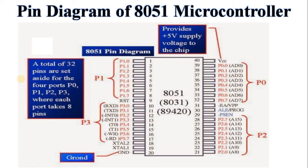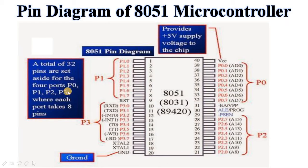The AT51 microcontroller is a 40-pin IC chip in dual in-line package. The AT51 has 32 I/O pins configured as 4 eight-bit parallel ports: P0, P1, P2, and P3. All ports are bidirectional. Each port consists of a latch, an output driver, and an input buffer.